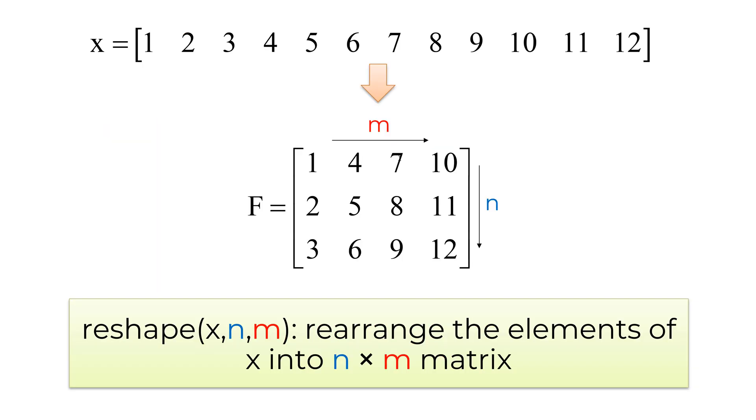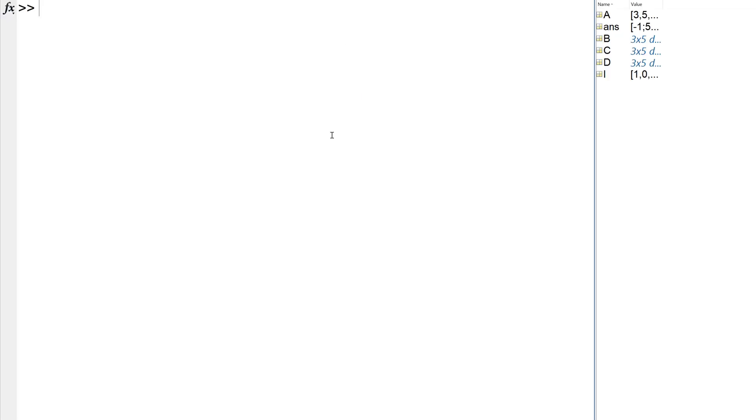If you want to rearrange the elements of existing matrix or vector, the reshape function can be used. The reshape function requires a matrix row and column size that you want to reshape. For example, you can create a given matrix F by creating a row vector X from 1 to 12 as a dummy vector and then rearrange it into 3 by 4 matrix by using reshape(X, 3, 4). The total numbers of elements of the reshape matrix should be the same as before.